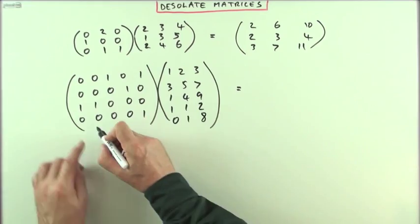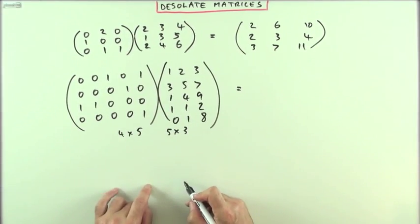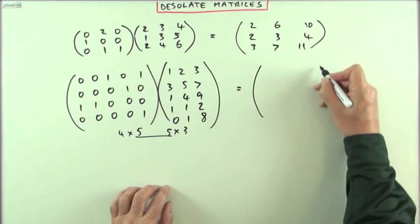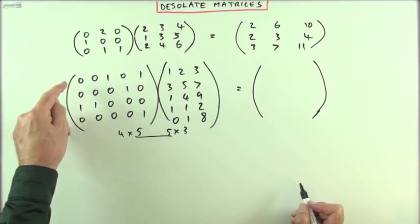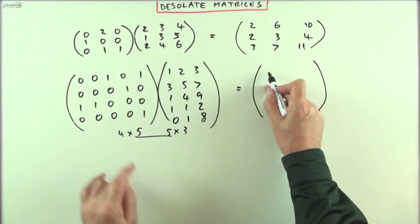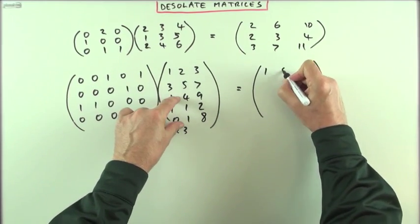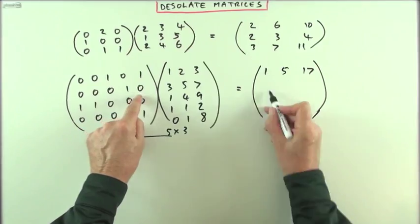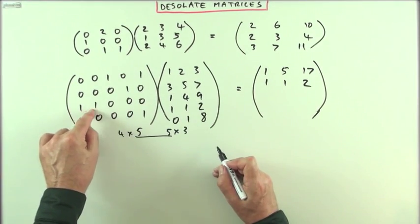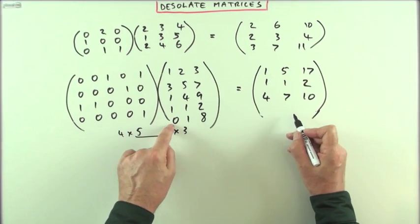Here's another case: a four-by-five matrix times a five-by-three matrix. They conform for multiplication and the result should be a four-by-three. It's a pre-multiplication, so I use row operations. The first row of answers: none of the first, none of the second, the third row plus the fifth row added together - that's 1, 5, 17. The next row: just row four - 1, 1, 2. The third row: row one plus row two - 4, 7, 10. The last row: just the last row - 0, 1, 8.